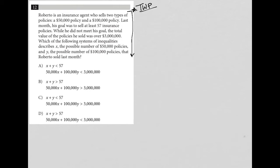This question says Roberto is an insurance agent who sells two types of policies, a $50,000 policy and a $100,000 policy. I'm going to write that down - we have the two policies: 50K and 100K.